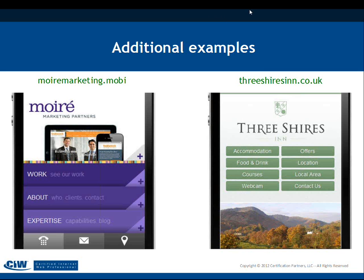Mora Marketing uses the .mobi extension for its mobile environment and automatically redirects mobile devices to it. They show samples of work, who they work with, and their specific expertise — directing your eye to those three things immediately. The Seashires Inn in the north of England does a pretty good job: they show location, accommodation options with room photos, and ability to book a room, achieving simplicity of design while conveying good information and branding.